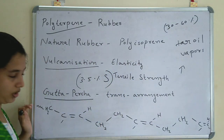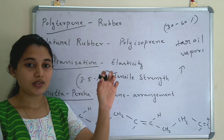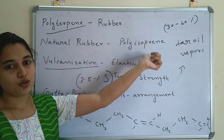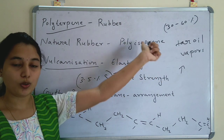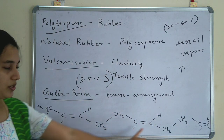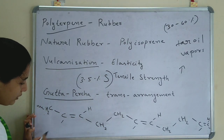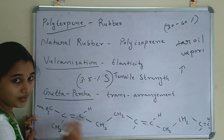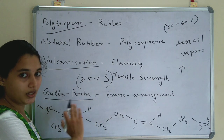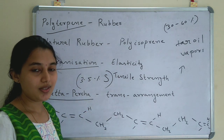Gutta-percha is another form of natural rubber where the polyisoprene arrangement is trans. In natural rubber (other than gutta-percha), the arrangement is cis — the CH2 groups are on the same side of the double bond. In gutta-percha the CH2 groups are on opposite sides, giving a trans arrangement.